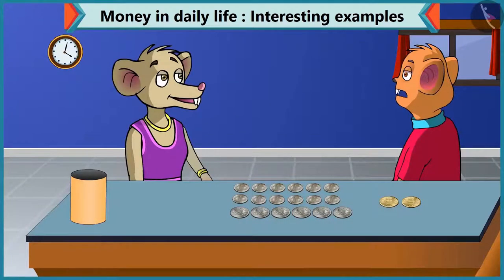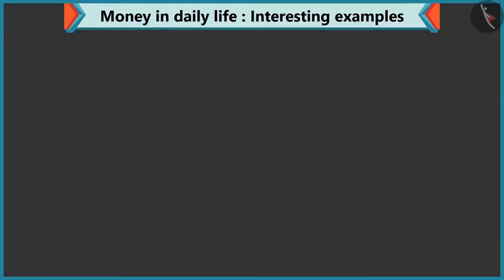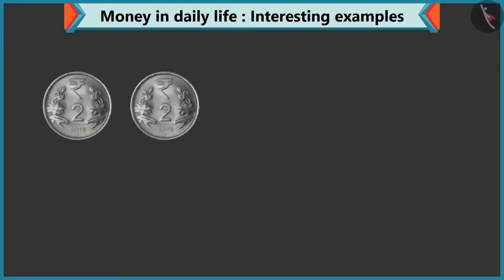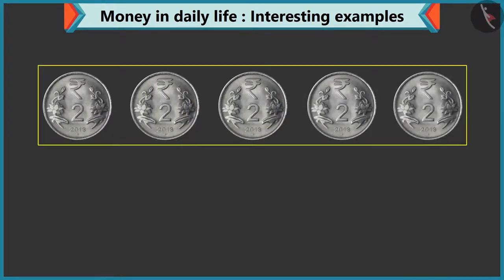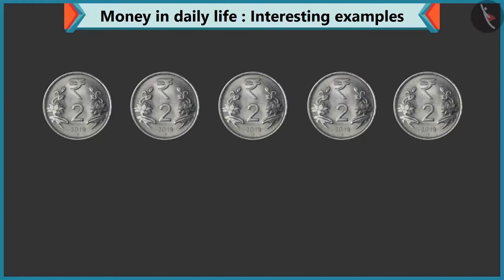Give me 5 coins of 2 rupees. Chi Chi counts out 5 coins: 1, 2, 3, 4 and 5. That gives us 5 coins of 2 rupees.